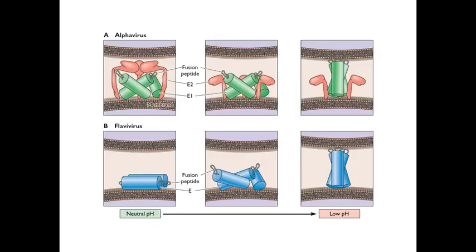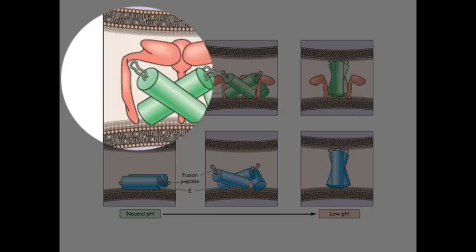These type 2 fusion proteins that lie on the membrane, they also hide their fusion protein, just like the type 1 fusion proteins. Here are just two different kinds of type 2 fusion proteins from an alphavirus and a flavivirus. And they show two different mechanisms of this hiding. In the alphavirus, the fusion peptides, which are shown as these loops here, these are trimers or dimers.